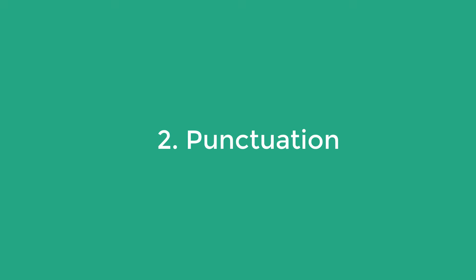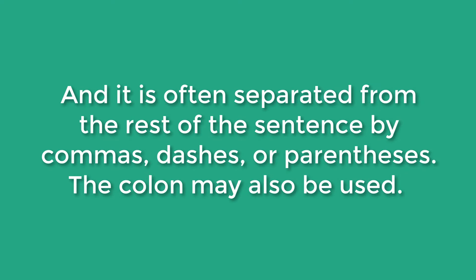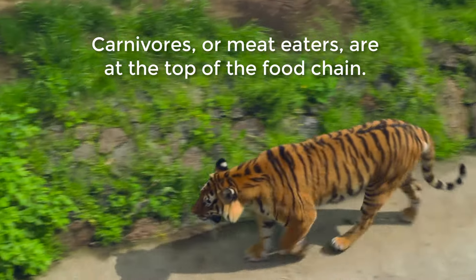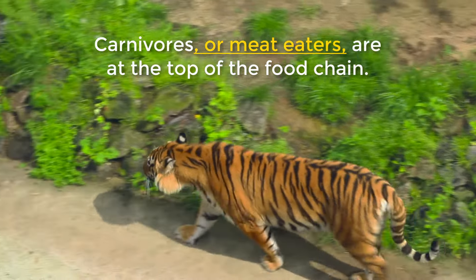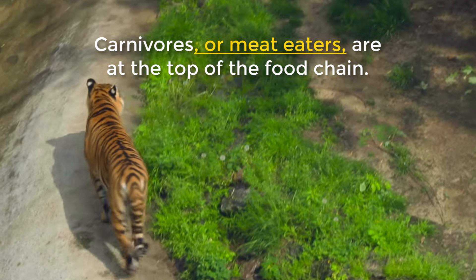Number two: punctuation. When you use punctuation, the meaning of the word is usually right after the unfamiliar word, and it is often separated from the rest of the sentence with commas, dashes, or parentheses. Sometimes the word 'or,' 'that is,' or 'in other words' is also used. Let's look at these three examples. Carnivores, or meat eaters, are at the top of the food chain. You'll notice that the phrase 'or meat eaters' encased in commas is used to define the word carnivores.